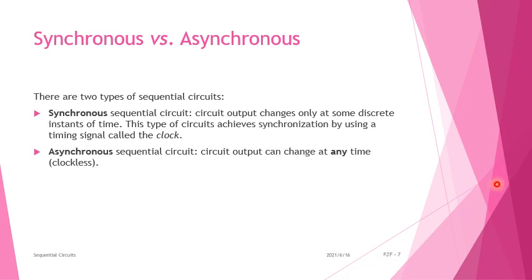Next, synchronous and asynchronous circuits. Sequential circuits are classified into two types: synchronous and asynchronous. Synchronous sequential circuits means the circuit output changes only at discrete instances of time, achieved by using a timing signal called the clock. Asynchronous sequential circuits means the circuit output can change at any time — it varies at any instant of time and uses clockless signals. The main difference between synchronous and asynchronous is the presence or absence of a clock.